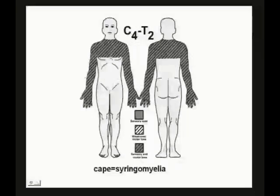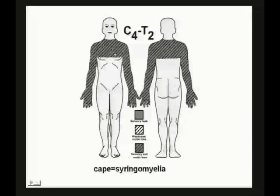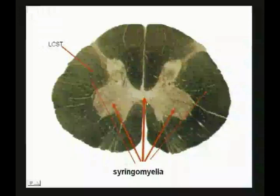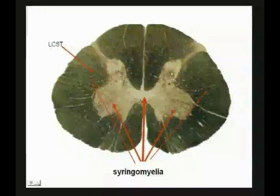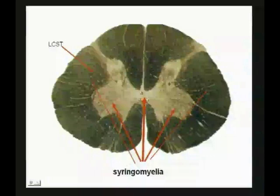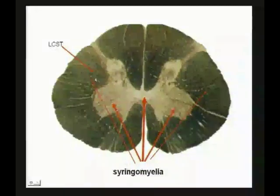Here's a syringomyelia running from about C4 to T2. There's loss of pain and temperature — it's gotten the crossing fibers from those dorsal horn cells — and also weakness, meaning it's gotten into the ventral horn. Syringomyelia is a cavitation, a slit-like cavity in the spinal cord. The dorsal horn cells come down and cross — you get a deficit two levels below. The slit runs for more than one level. The syrinx can also get the ventral horn causing lower motor neuron problems, and even tweak the LCST causing upper motor neuron problems.